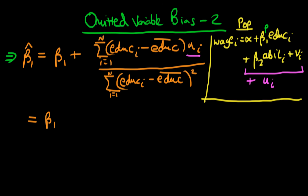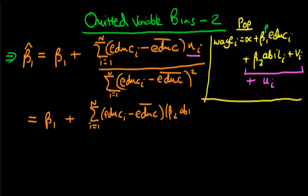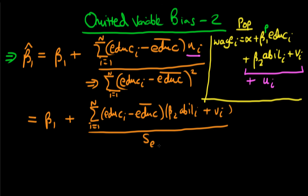Because of that, we can rewrite this term by substituting in for U_i using beta_2 times an individual's level of innate ability plus an idiosyncratic error V_i. So we can rewrite our sum as beta_1 plus the sum from i=1 to n of (education_i minus the average level of education) times (beta_2 times innate ability plus V_i), all divided by the sample variance of education, S_education squared.